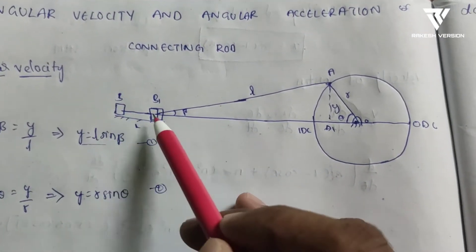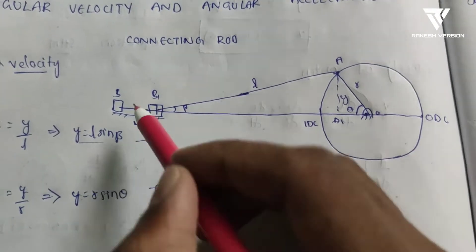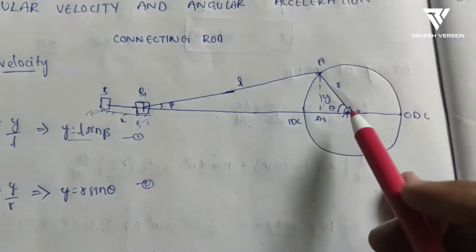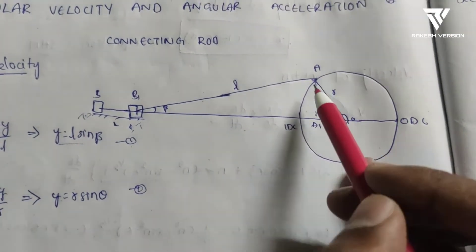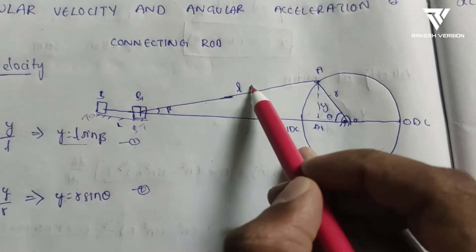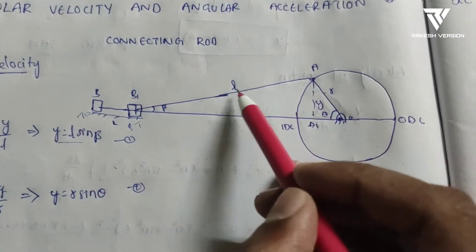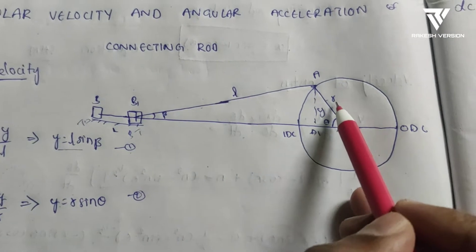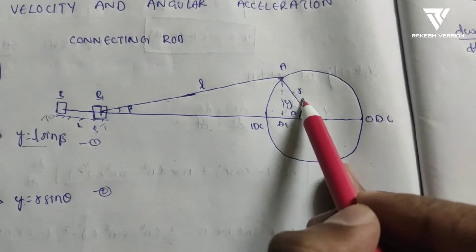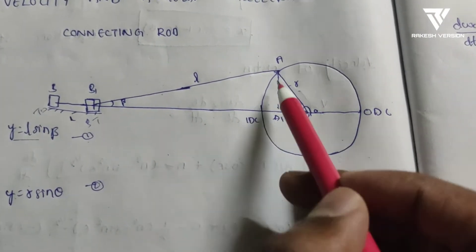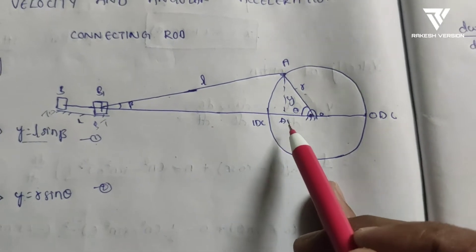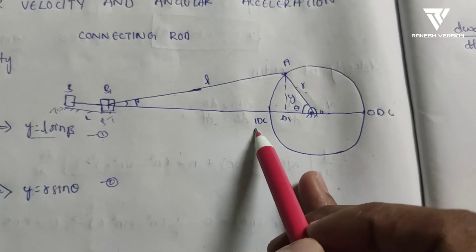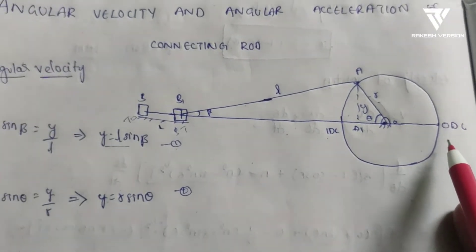We have the piston movement from the bottom dead center to the top dead center. The crank is indicated with length R (radius) and the connecting rod with length L. This is the perpendicular distance a1, and we also have the inner dead center and outer dead center.